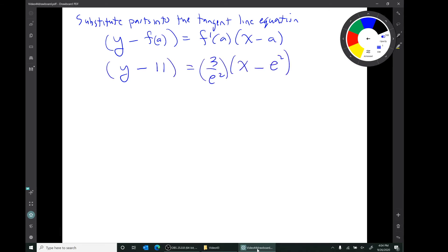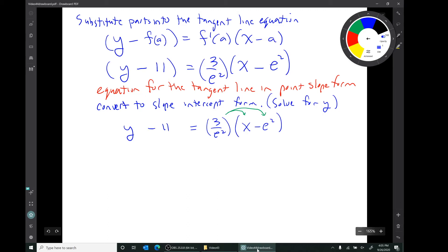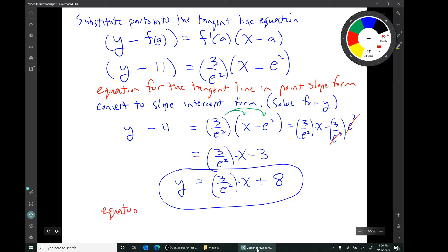There's our equation for the tangent line in point-slope form. Because remember, the equation that we started with is the point-slope form of the equation for the tangent line. So we should convert this to slope-intercept form. We simply solve for y. There's our equation: y equals (3/e²)·x + 8. Notice, there's our number. That's the slope of the tangent line, 3/e².